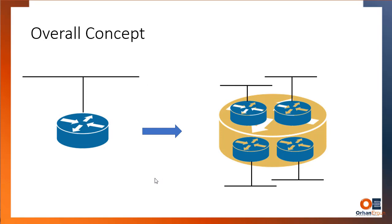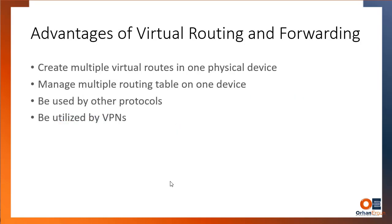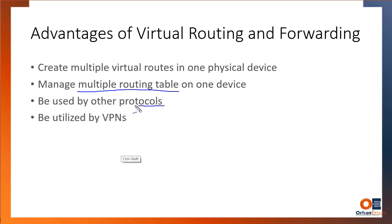The concept of router virtualization means it looks as if there are multiple routers, and each one has its own routing table — which is very important to understand. We can have multiple routing tables, each separate from the others, and they do not know about each other unless we want them to. We can also use this with multiple protocols and even VPNs, which we'll configure in a later session.